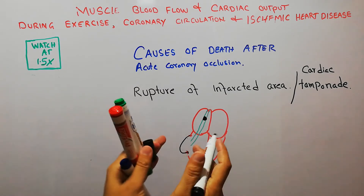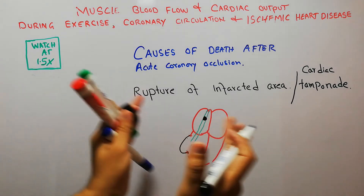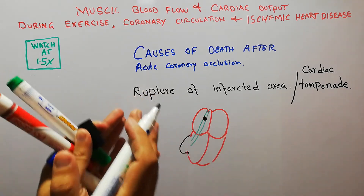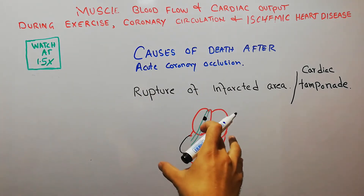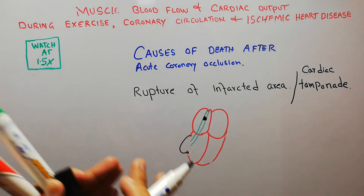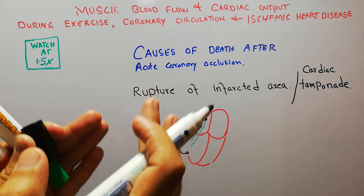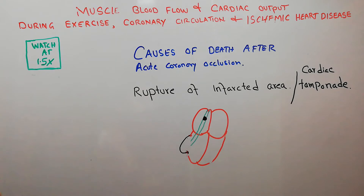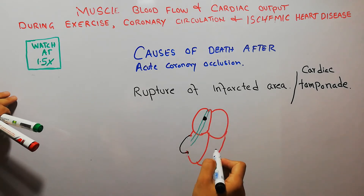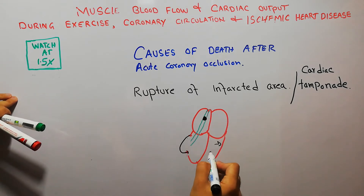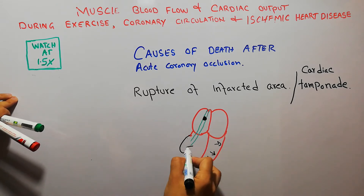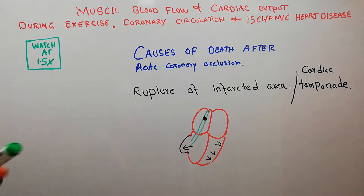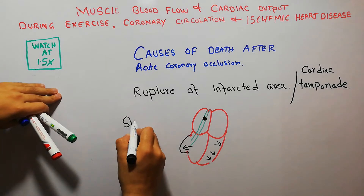What happens is that the force of contraction is distributed such that there is no proper cardiac pumping — the cardiac output decreases and the pumping of blood decreases. The normal force which should be applied to the heart walls instead goes outward through this damaged portion, which is known as systolic stretch.